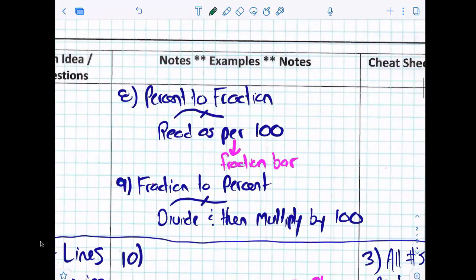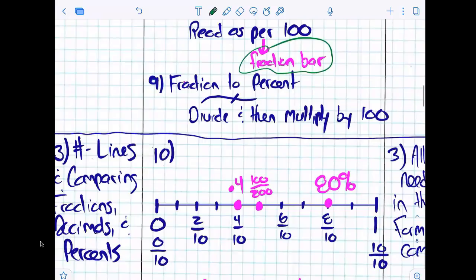How do you convert from a percent to a fraction? Put it over 100. What does per mean? Divide by 100. And how do you go from a fraction to a percent? Divide by 100. Boom.